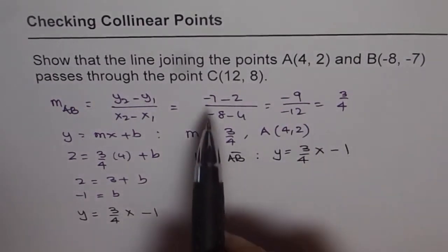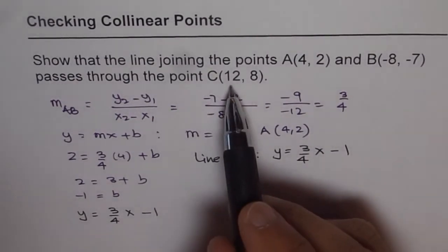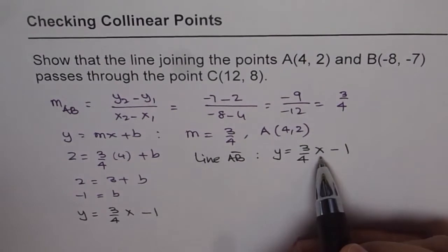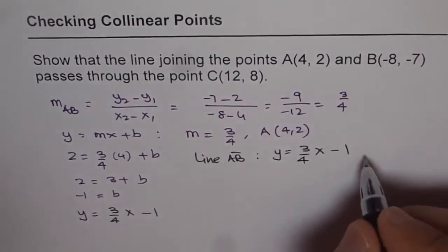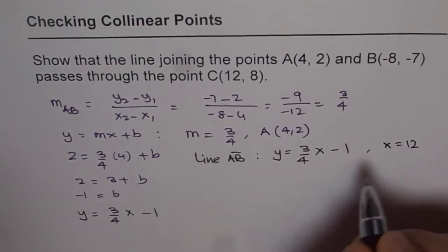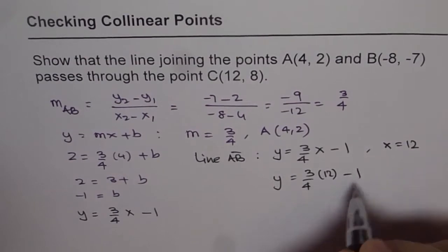Now to show that this point C is on this line, what we can do is plug in the value of 12 for x and find whether y is really 8 or not. So let's do that. Let's substitute x equals 12 here.